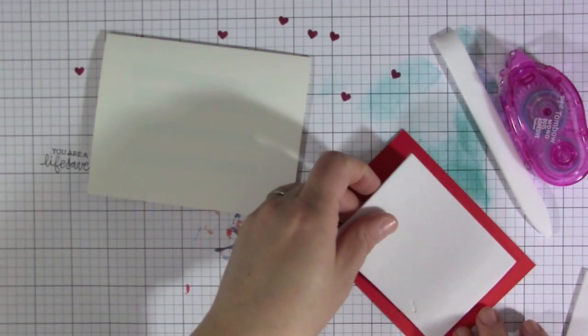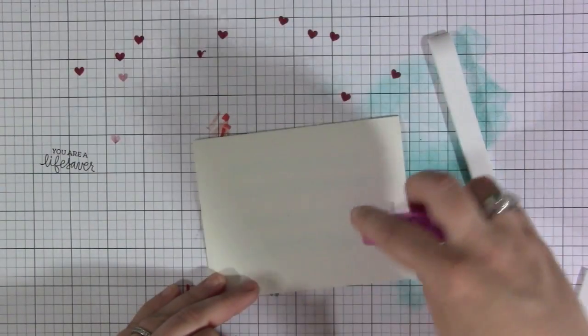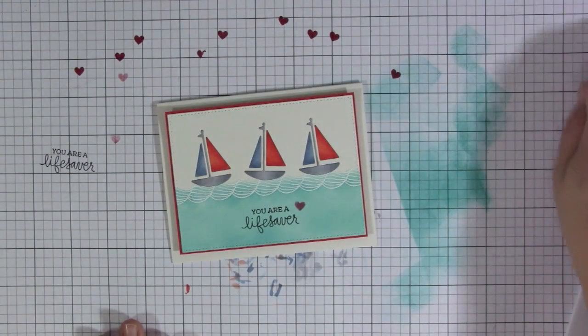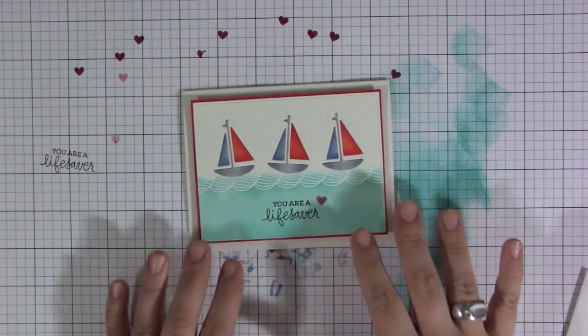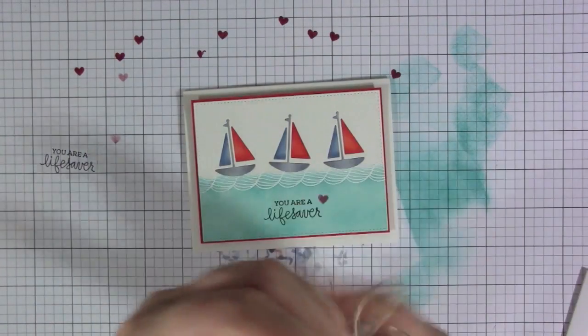Now it's time to start to assemble the card. I ended up matting the stamped piece. I cut it out with a rectangle stitch die and matted it onto a red piece of cardstock from the kit. Then I used a piece of craft foam in between the matted red piece and the cream card base just to give it a little bit of dimension.